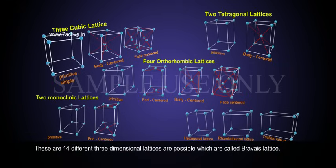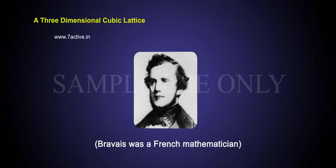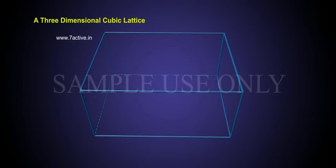There are 14 different three-dimensional lattices possible, which are called Bravais lattice. Bravais was a French mathematician. Unit cell parameters a, b, c are three edges and alpha, beta, and gamma are the angles between them.